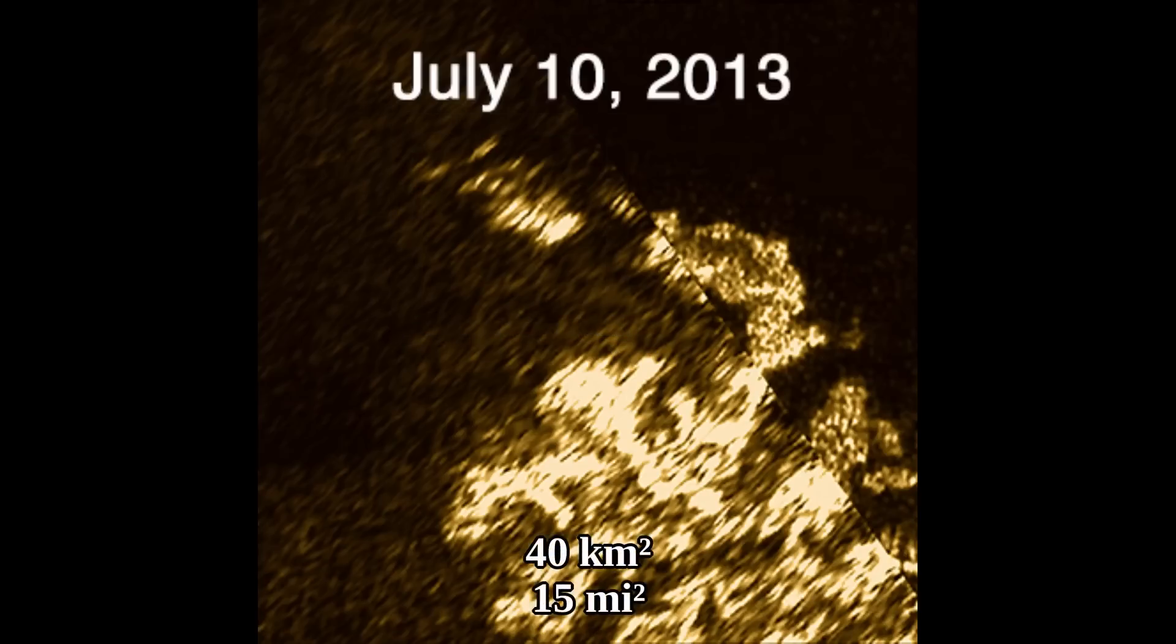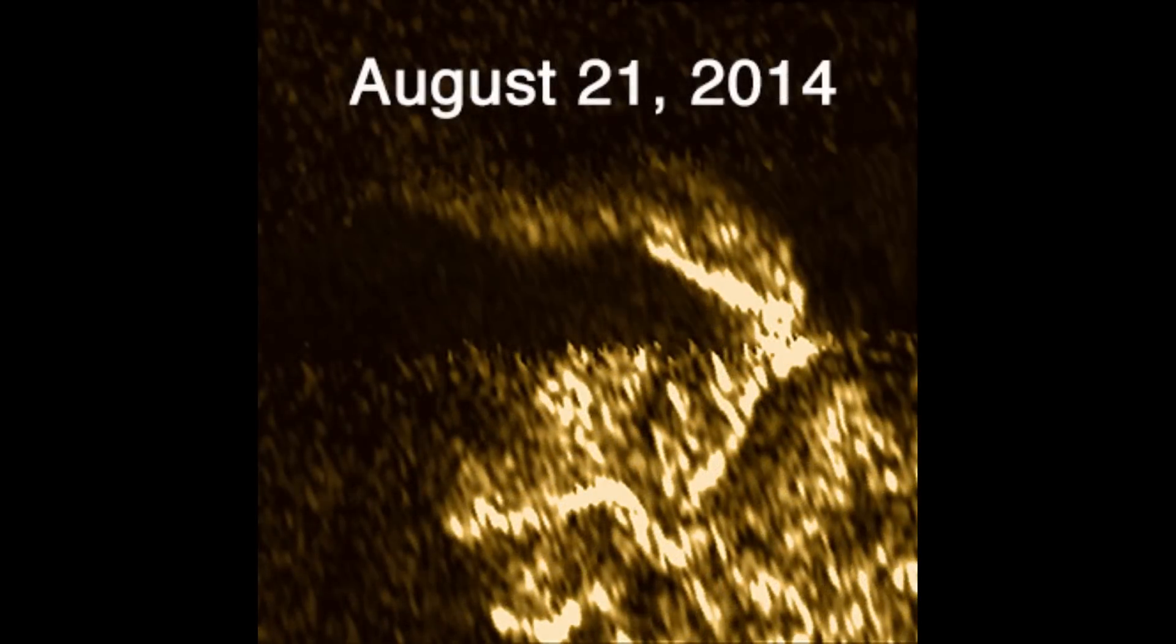But an image taken in 2013 shows that a radar-bright feature appeared that has a surface area of about 40 km², similar in size to Manhattan island. Then a year later in 2014, the bright feature seemingly mostly vanished.